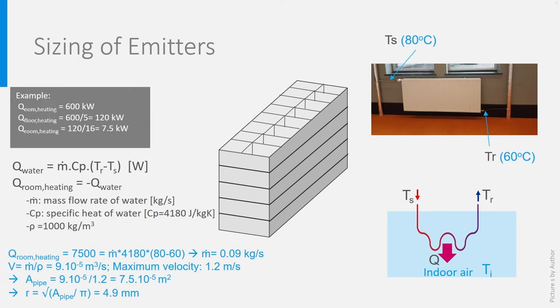In this example, we know that Q room heating is 7500 Watt and we know the temperatures. So we can easily estimate the needed mass flow rate m, which is by the way controlled by the valve mounted on the radiator at the supply side. In our case, it is 0.09 kg per second.